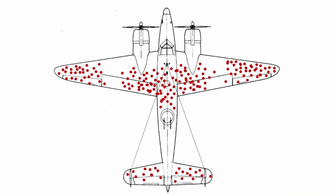Once bombers returned, they would often have numerous bullet holes. But these bullet holes were not evenly spread across the aircraft. Most of the holes were concentrated around the wings and fuselage, with almost twice as much damage in those areas as the damage around the engines and the cockpit.